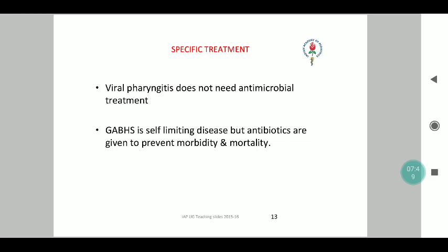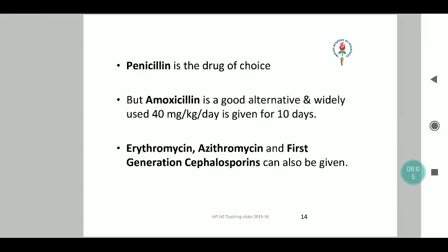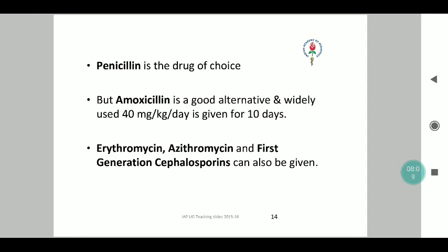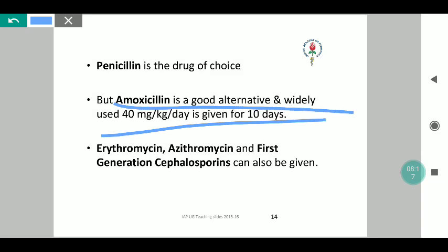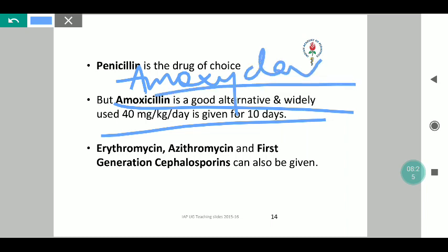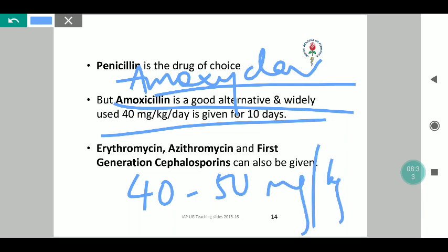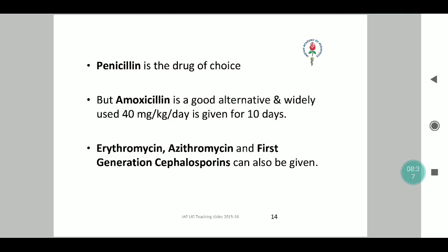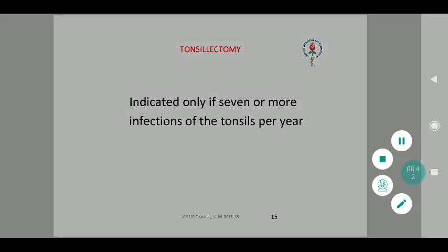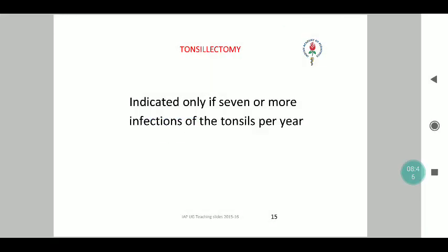There is no role for specific antimicrobial treatment for viral pharyngitis. Group A beta-hemolytic streptococci pharyngitis of bacterial origin is also self-limiting, but the role of antibiotics is very important to prevent morbidity, mortality and complications. Penicillin remains the drug of choice, but due to allergies and resistance, the alternative is amoxicillin and more recently amoxiclav. The dosage is 40-50 mg per kg per day. Alternative drugs like erythromycin and azithromycin can also be given. A specific indication for tonsillectomy remains 7 or more tonsil infections per year as per the latest guidelines.